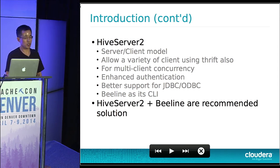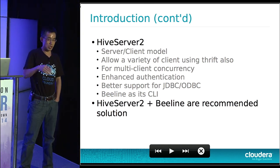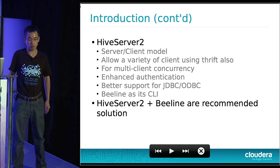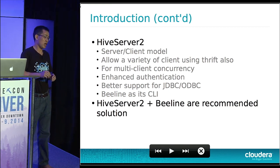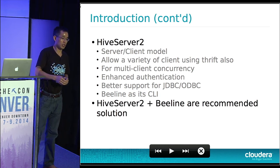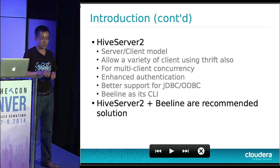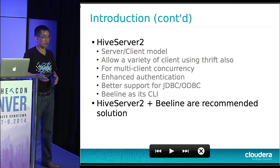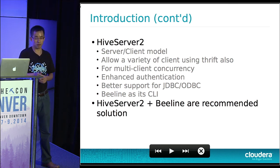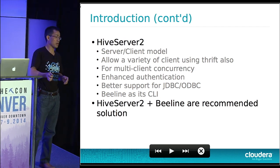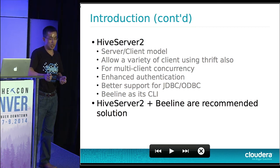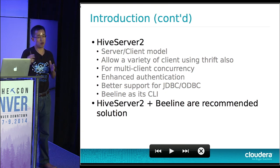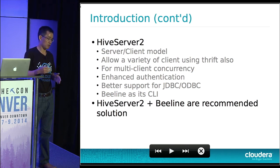The community developed HiveServer 2 to solve mostly the concurrency problem, and it also enhanced the JDBC/ODBC connection. Why create a new server rather than fix the old one? There are two reasons. First, there is a design flaw in the old HiveServer 1, especially in the Thrift APIs — fixing that would be as much effort as creating a new server. Second, there is a compatibility problem: if you fix the Thrift API, you break backward compatibility for everyone already using those APIs to integrate with other products.